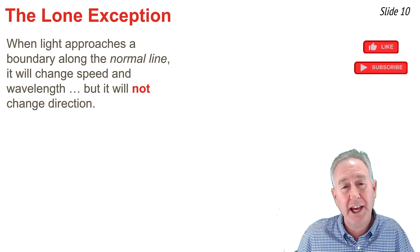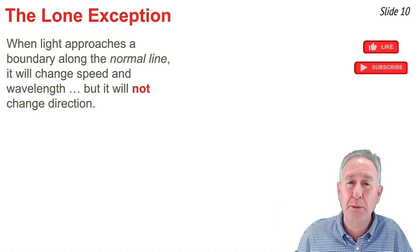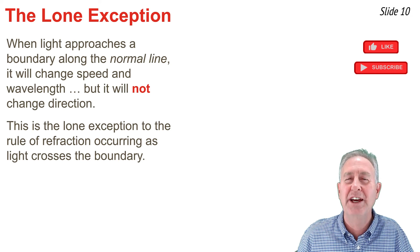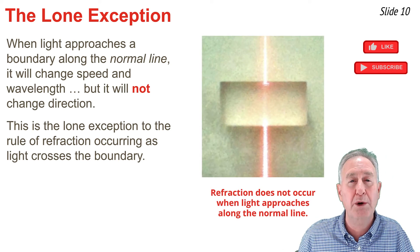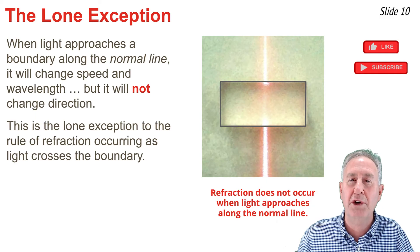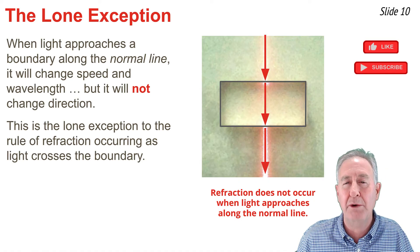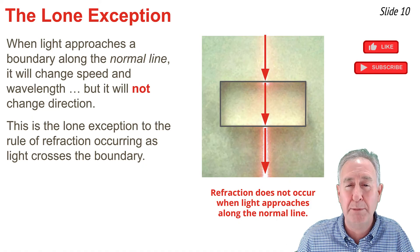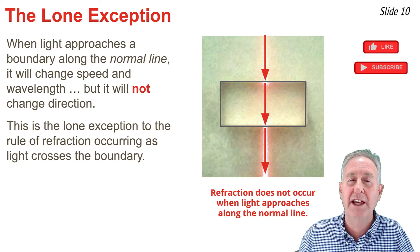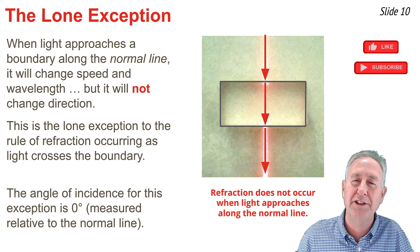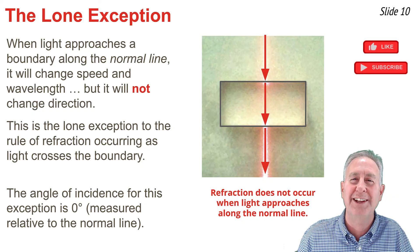There is one exception to refraction: when light is traveling along the normal line as it approaches the boundary — that is, it's traveling perpendicular to the boundary. When this takes place, the light wave will change its speed and wavelength, but it will not change its direction. This is the lone exception when light crosses the boundary between two materials. In this situation, the angle of incidence is zero degrees and the angle of refraction is zero degrees, measured relative to the normal line. So no refraction occurs as light crosses the boundary.